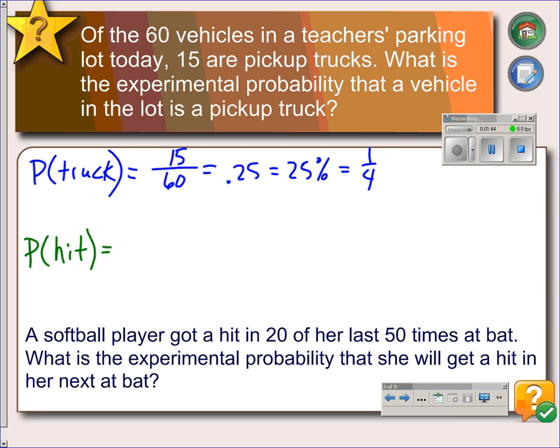The number of hits that she got so far is 20 out of 50 tries. So this would give her an experimental probability of 0.4, or 40%, or even two-fifths, if you want to write it as a fraction.